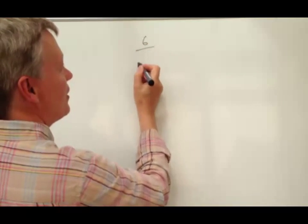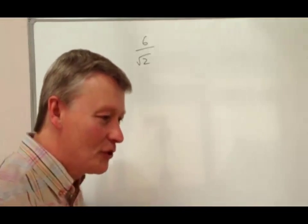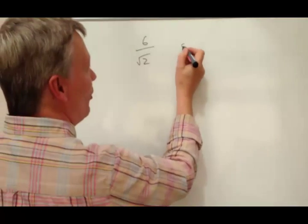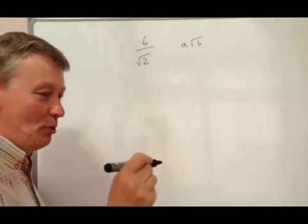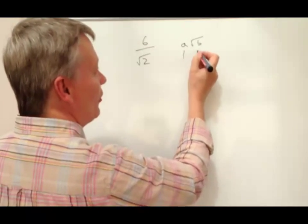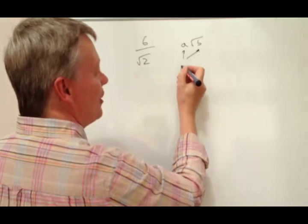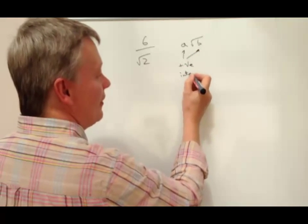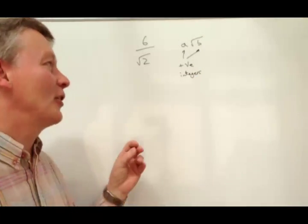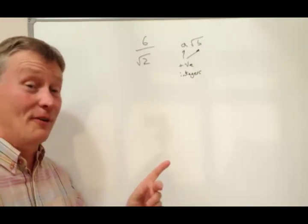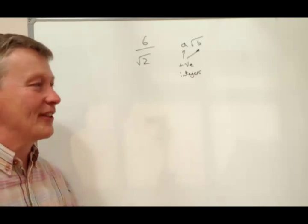The question is: simplify 6 divided by root 2 and write it in the form A root B, where A and B are positive integers. Okay, so that's the actual question. I'll write that in the comments section below. In the description section below, you can have a look at that for yourself.